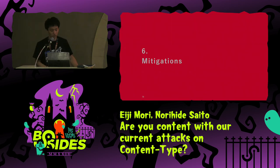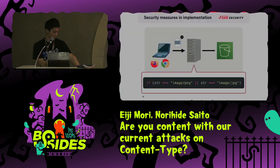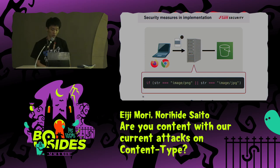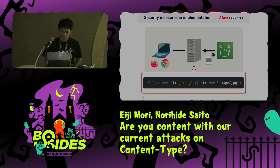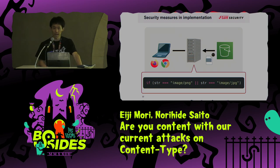So then, the question of course is how can we mitigate this problem? Be sure to verify the content type value with an exact match to see if it is the intended value. For example, the content type string equals image/PNG or image/JPEG. In addition, do not unconditionally trust the content type of the HTTP response, but verify it with an exact match.